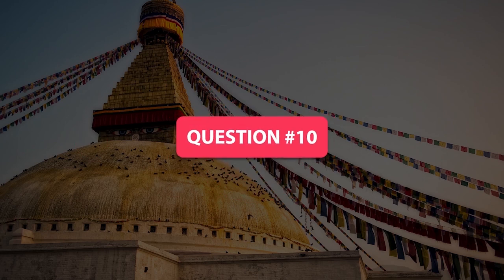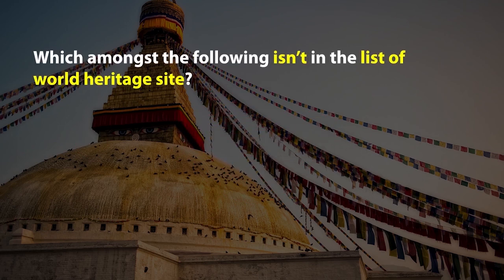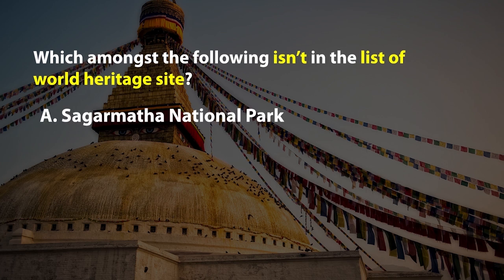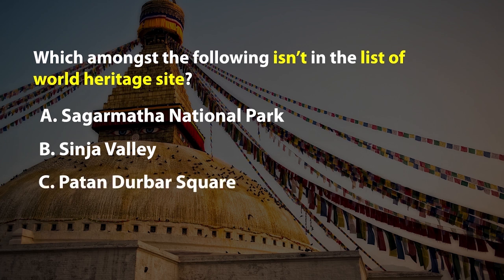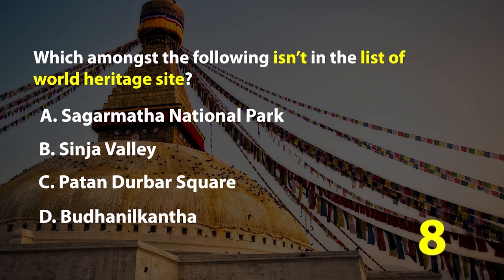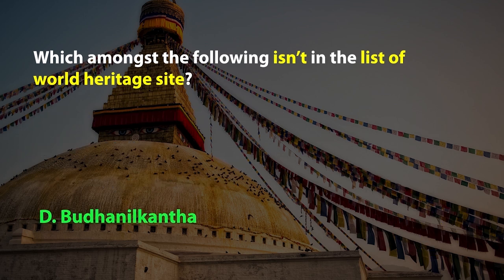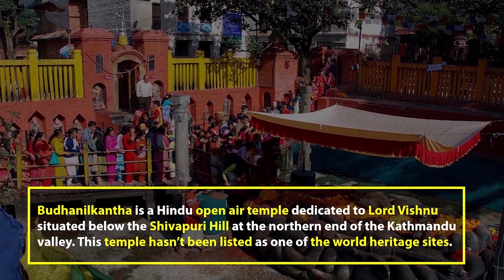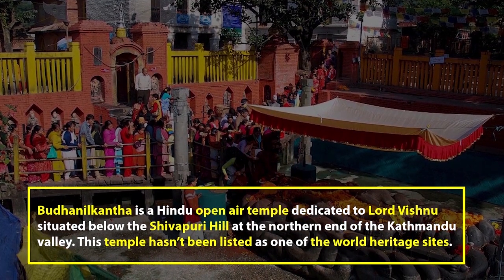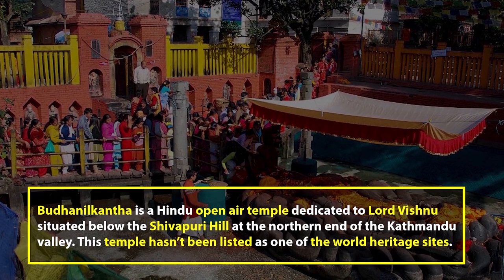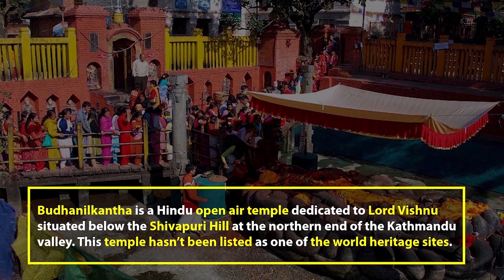Question number 10. Which amongst the following is not in the list of World Heritage Sites? A. Sagarmatha National Park, B. Sinja Valley, C. Patan Durbar Square, or D. Budanil Kanta. The right answer is D. Budanil Kanta is a Hindu open-air temple dedicated to Lord Vishnu, situated below the Sivapuri hill at the northern end of the Kathmandu valley, and has not been listed as a World Heritage Site.